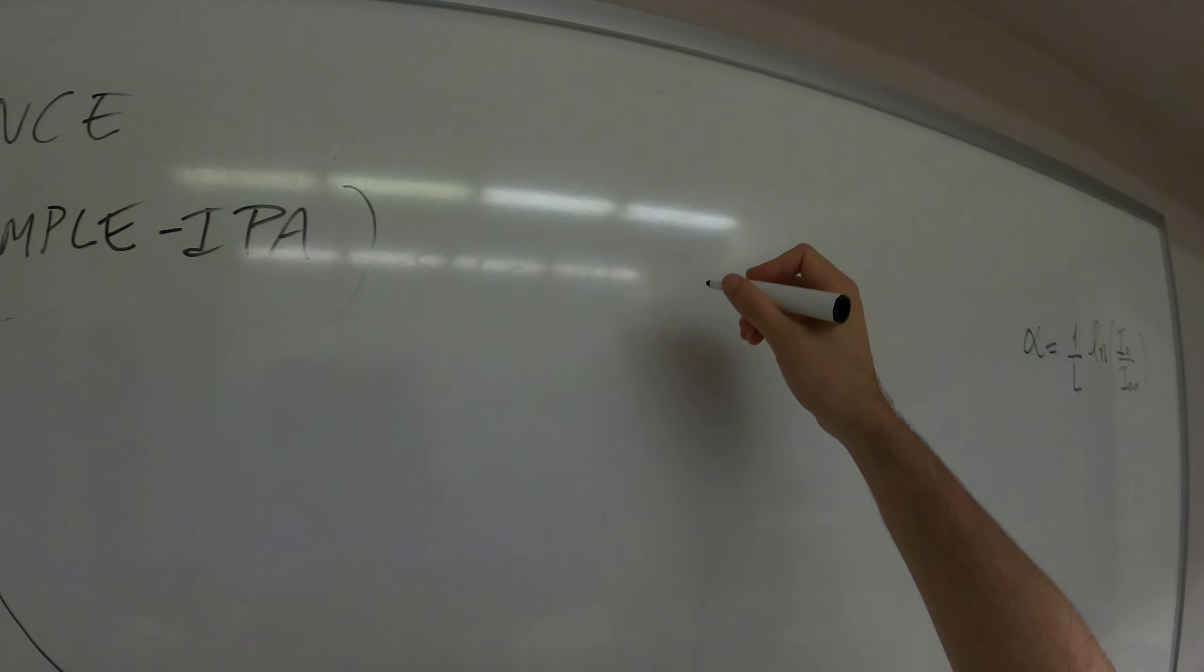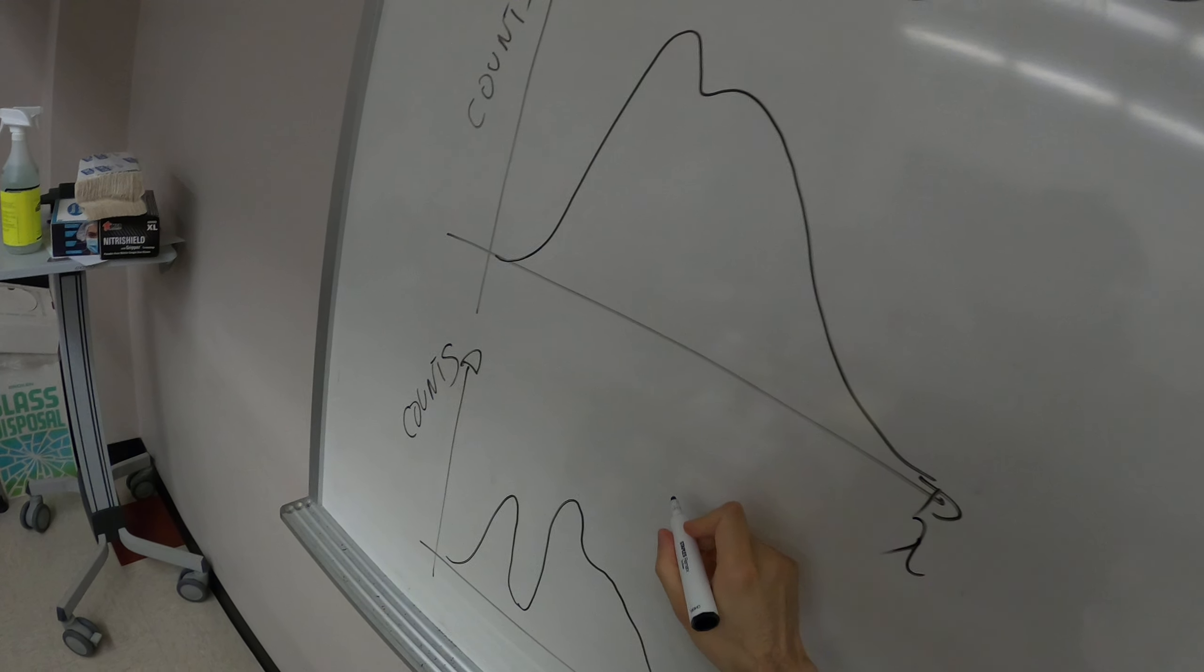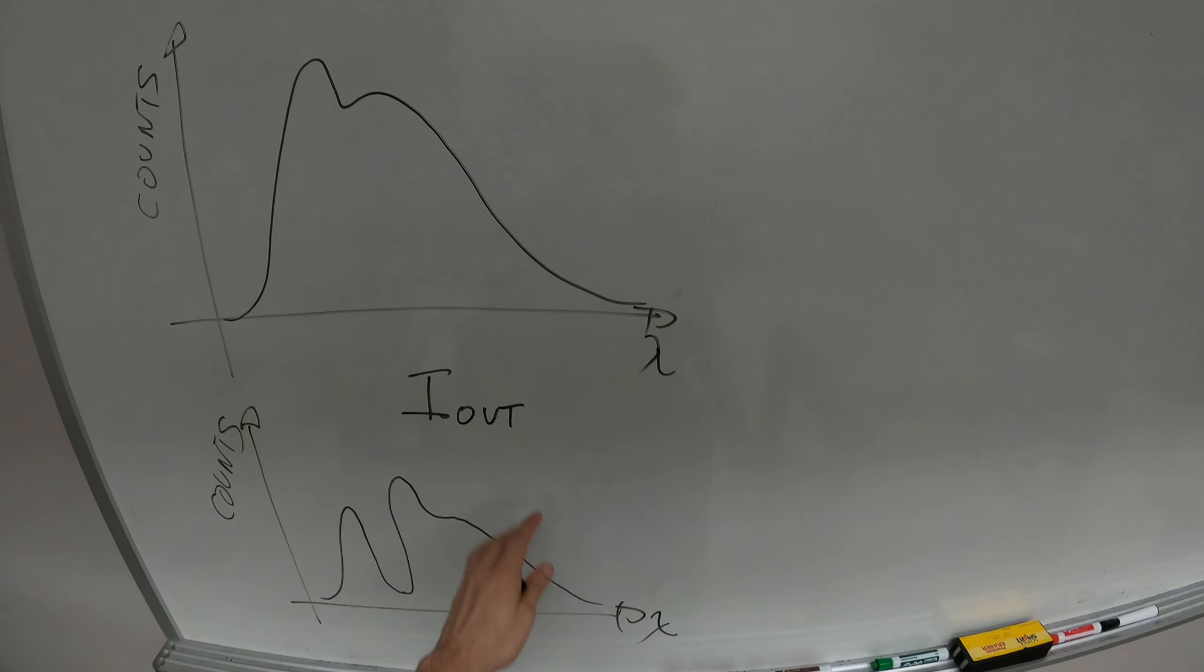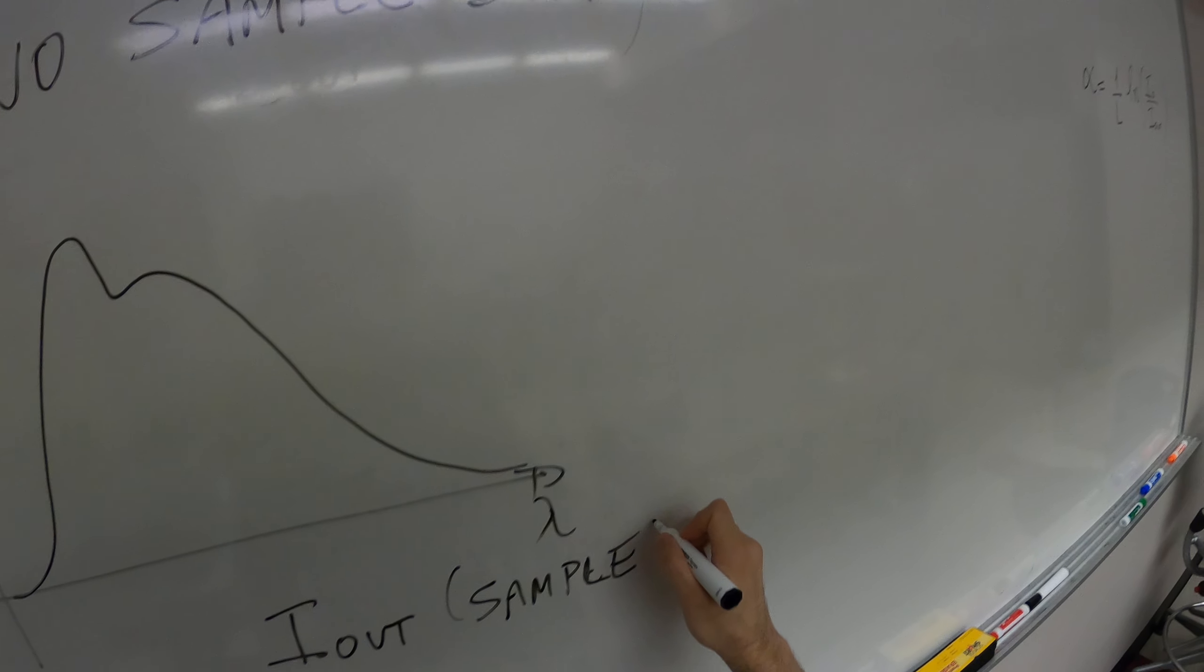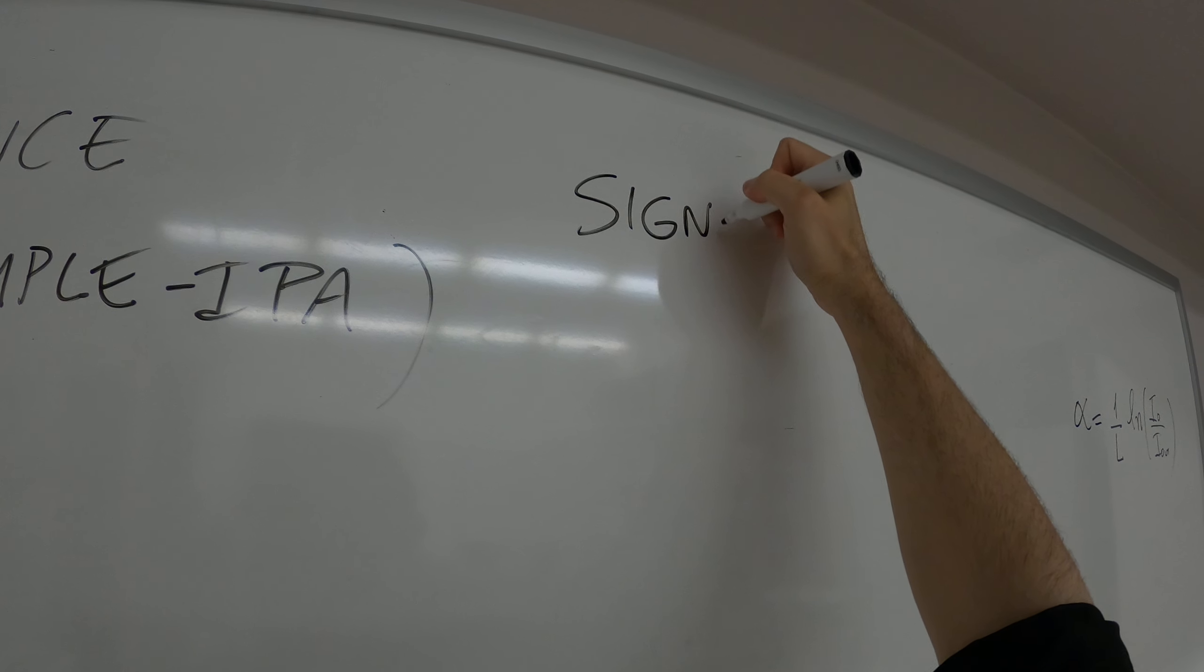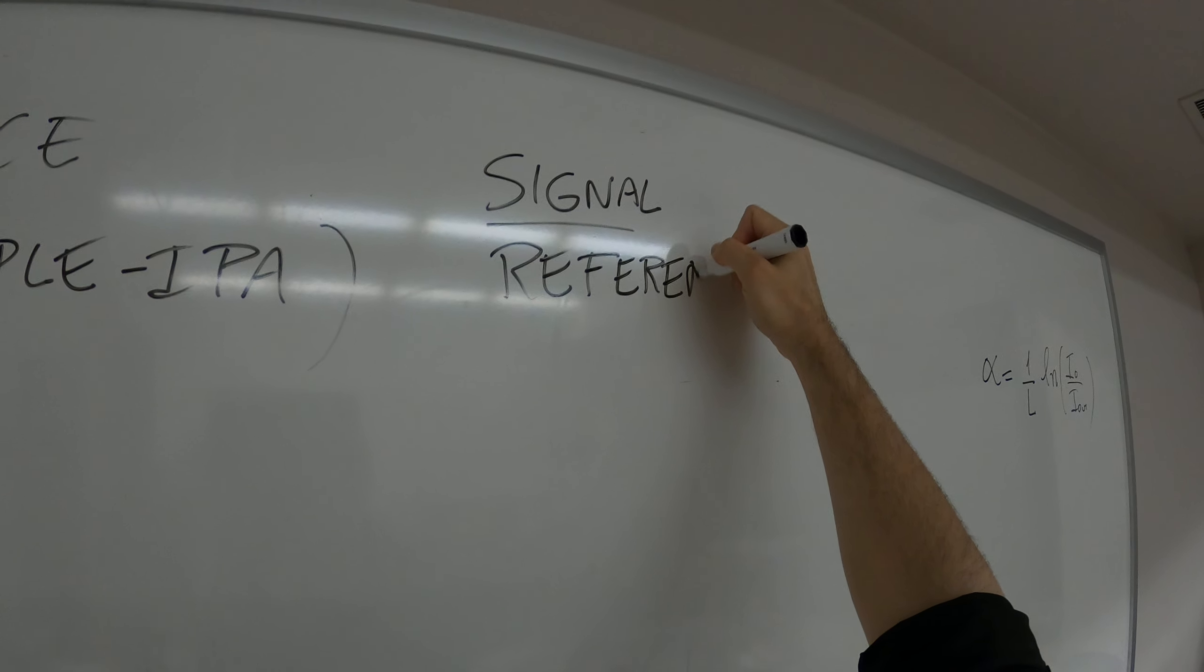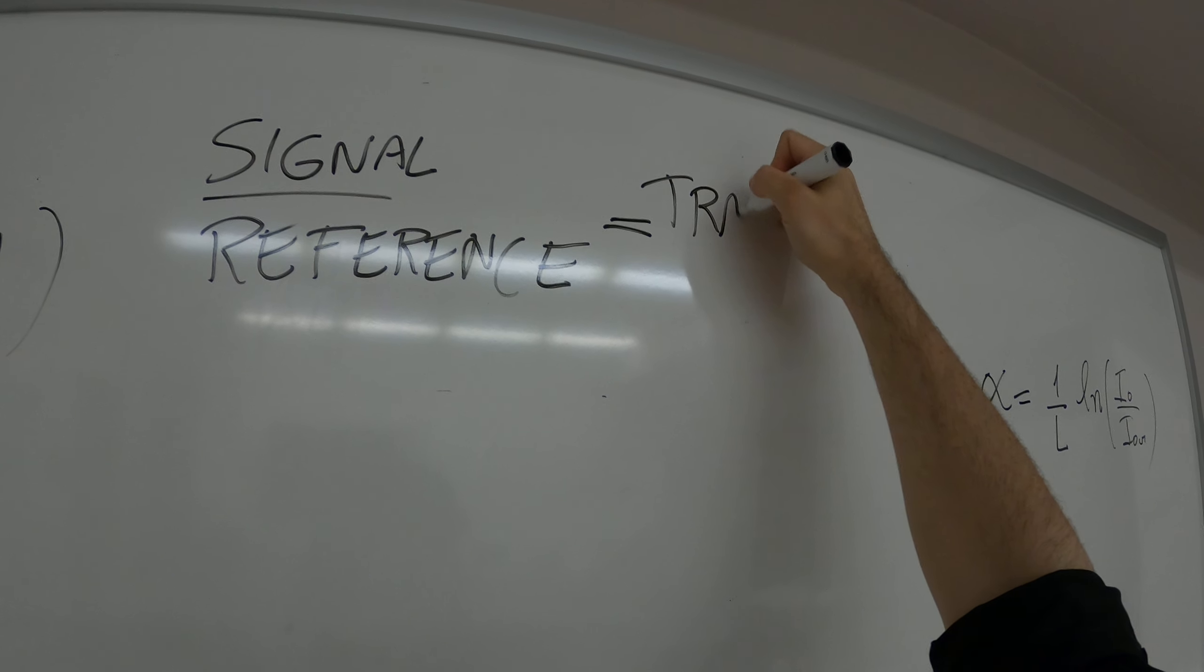And the signal, we divide the signal, or the, let's call this I out with the sample. We divide the signal by the reference, and this is called the transmittance of the sample.